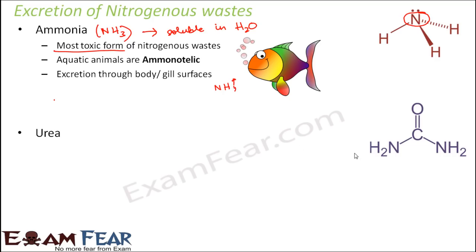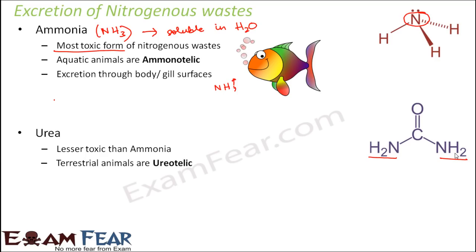Looking at the structure of urea, you can see it has two amine groups. It is lesser toxic than ammonia — less toxic, not as harmful. Terrestrial animals are generally ureotelic, meaning they excrete wastes in the form of urea. You might wonder why terrestrial animals excrete in the form of urea and not ammonia. That is because aquatic animals live in water, so they have a lot of availability of water around themselves.